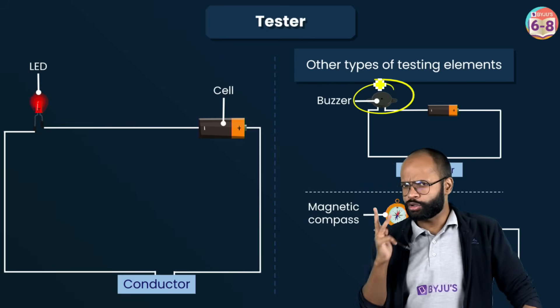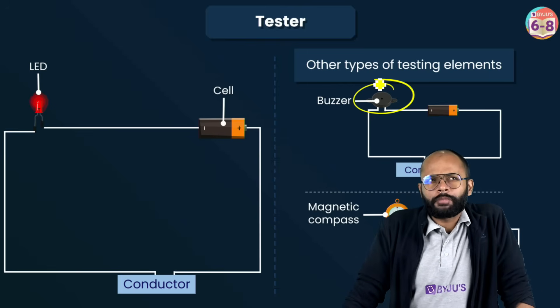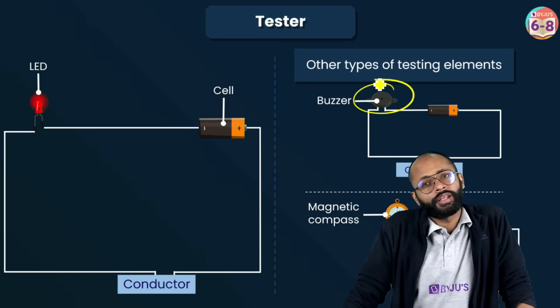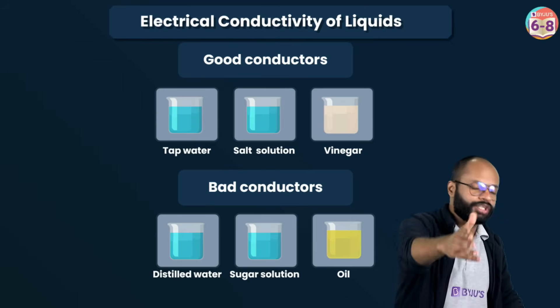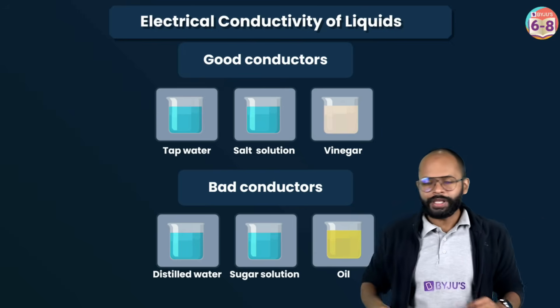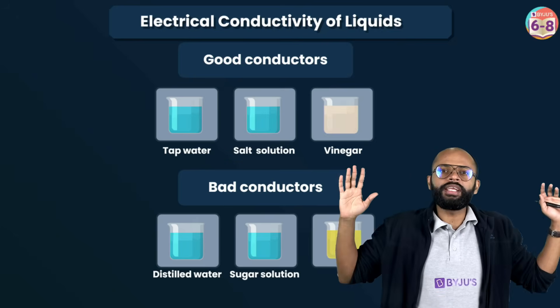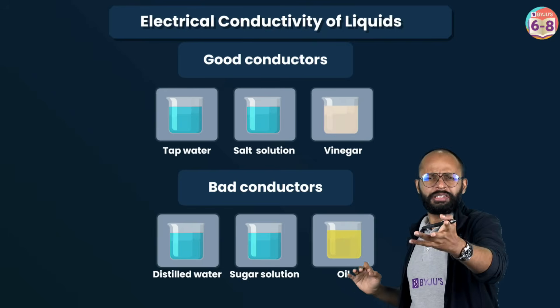So you have understood three types of testers. But is conducting only property of solids? No. Liquids can also conduct and that's what this chapter is all about. Liquids can also be good conductors, means they can allow current to pass through them. What they need? They need ions.